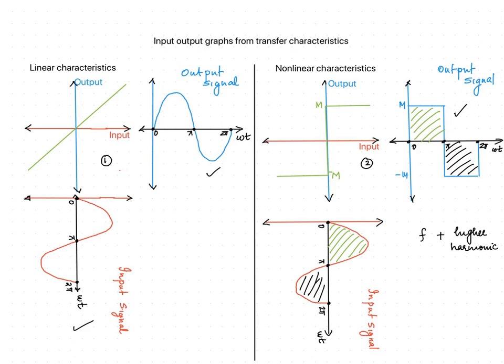Here, two transfer characteristics are given — one for a linear element and another for a non-linear element. The graph is drawn such that the red line of the transfer characteristics is moved down to get the y-axis of the input, and the blue line is moved towards the right to get the y-axis of the output. For both input and output, the time axis is drawn as the x-axis. As far as the transfer characteristics is concerned, time is not shown — it is an implicit function.